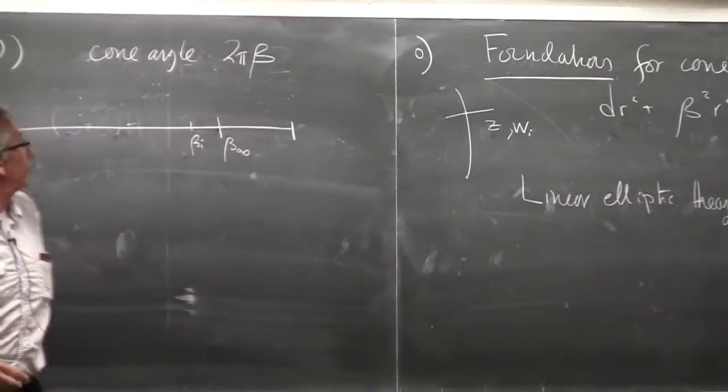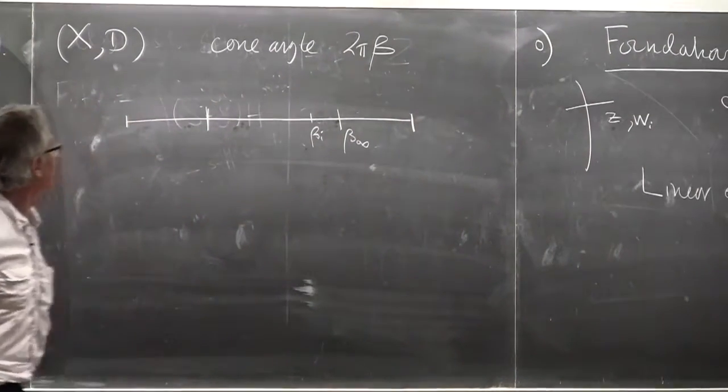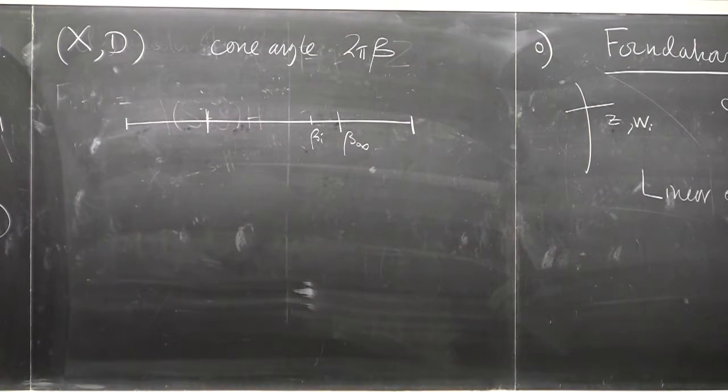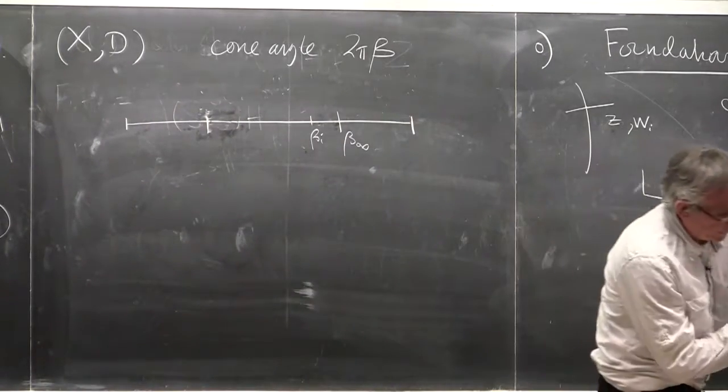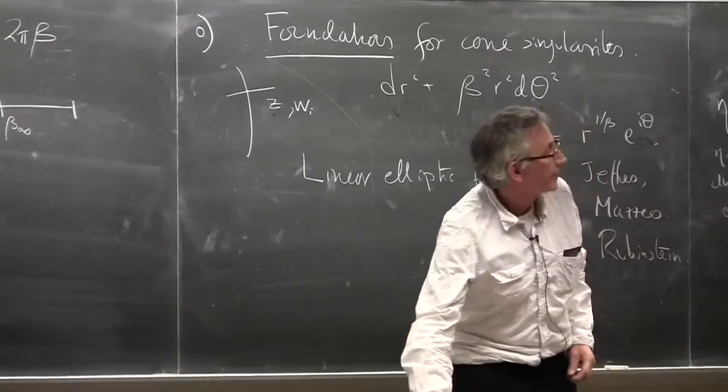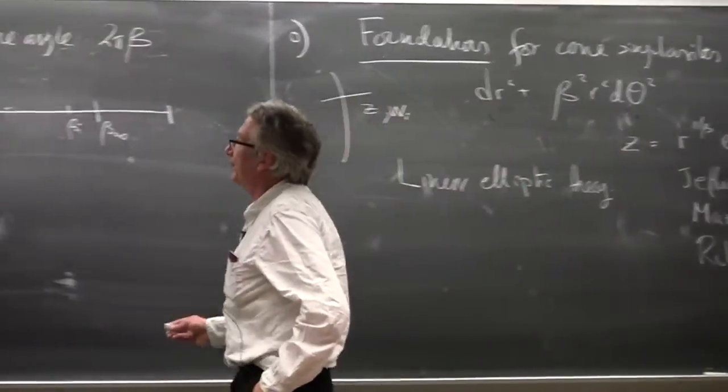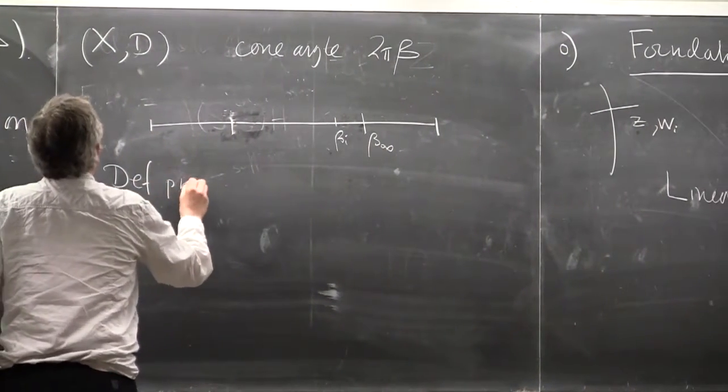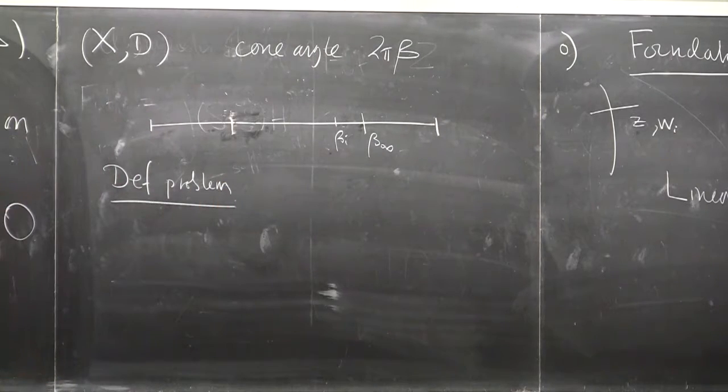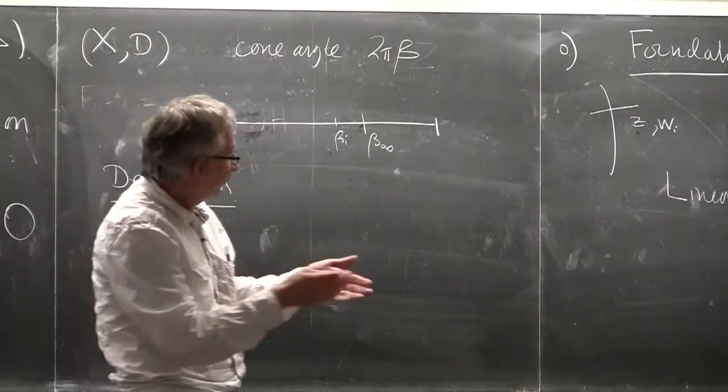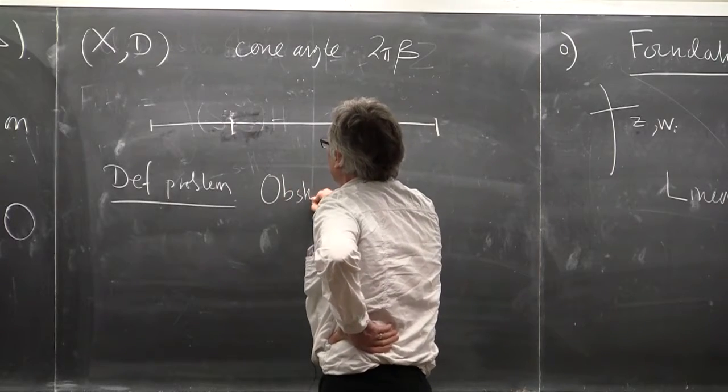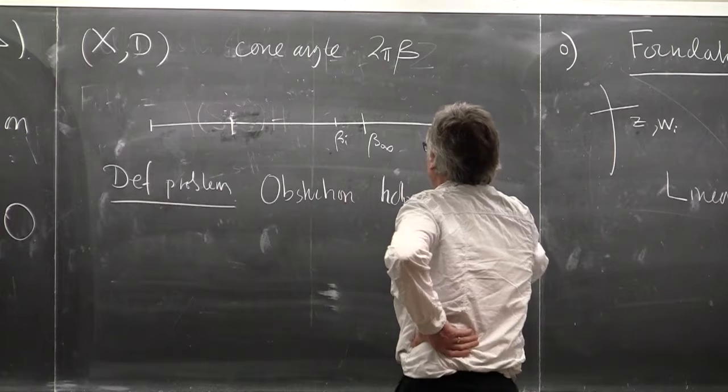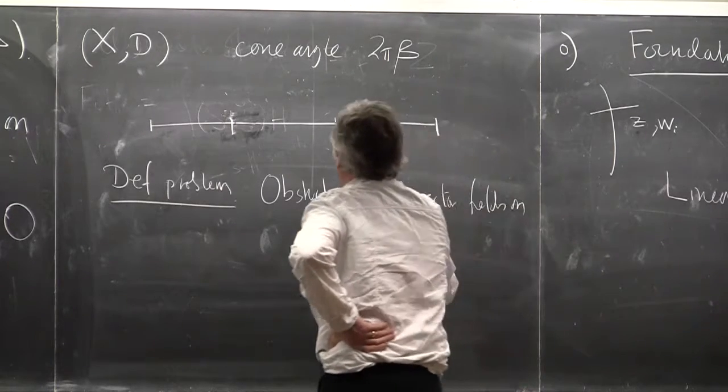So one application of having that theory is that you can, once you have the linear theory in place, you can relatively easily solve the deformation problem. To say, if you have a solution for one angle, you can slightly increase the angle. For the deformation problem, let's say something a bit more precise. If you just write it down and you use the implicit function theorem to linearize the problem, you apparently might have a problem given by obstruction, given by holomorphic vector fields on x which are tangent to d.